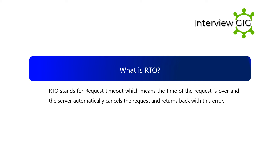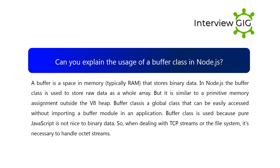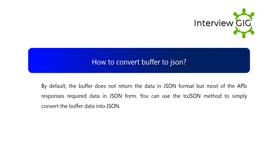Can you explain the usage of the Buffer class in Node.js? A buffer is a space in memory, typically RAM, that stores binary data. In Node.js, the Buffer class is used to store raw data as a whole array, similar to a primitive memory assignment outside the V8 heap. Buffer class is a global class that can be easily accessed without importing a buffer module. It is used because pure JavaScript is not well-suited to binary data, so when dealing with TCP streams or the file system, it is necessary to handle octet streams.